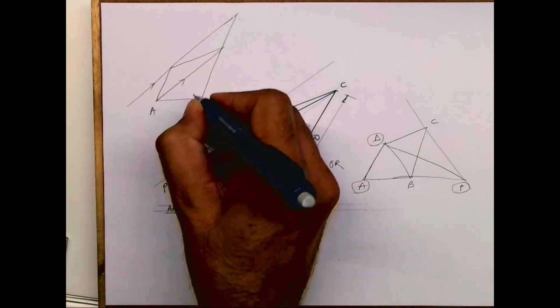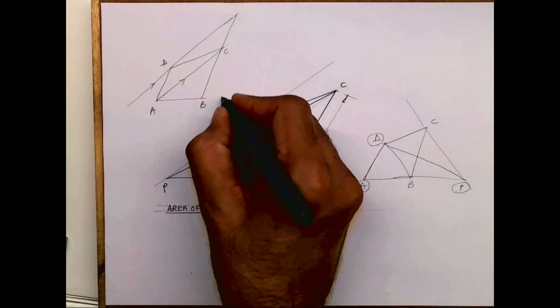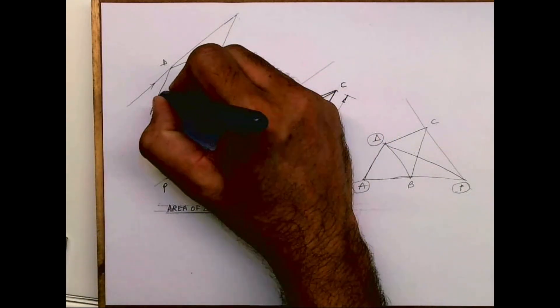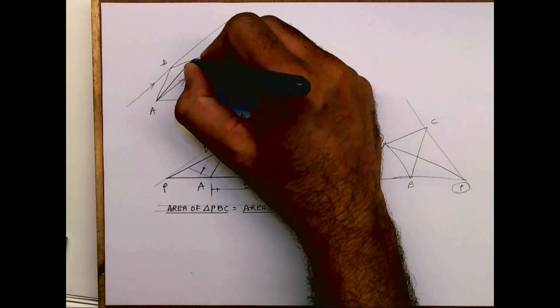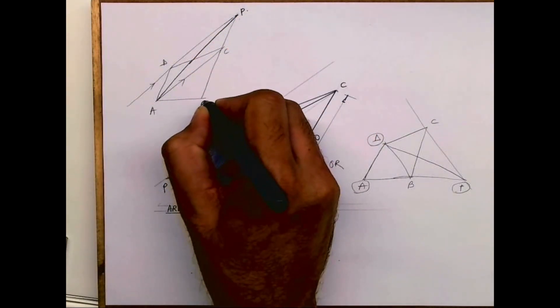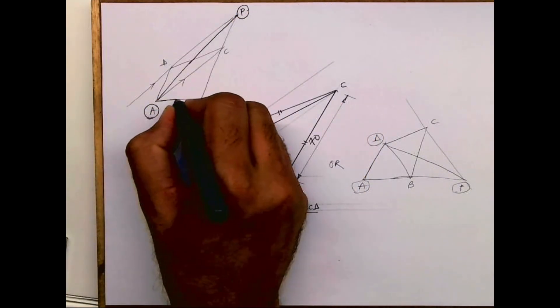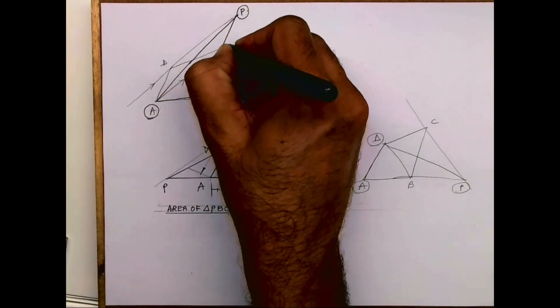So this is ABCD quadrilateral. Now instead of ACD, I'll have triangle APC. So if you see, BPA is the new triangle. So I hope you people have understood.